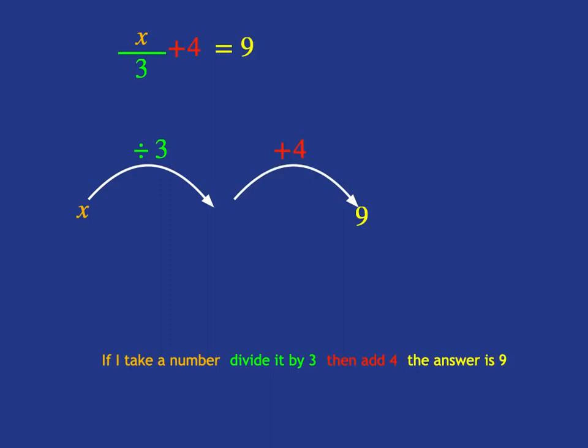Now we know the order in which things have been done to x is divide by 3, then add 4. We can go about solving for x by simply reversing the process, looking for the inverse operations.